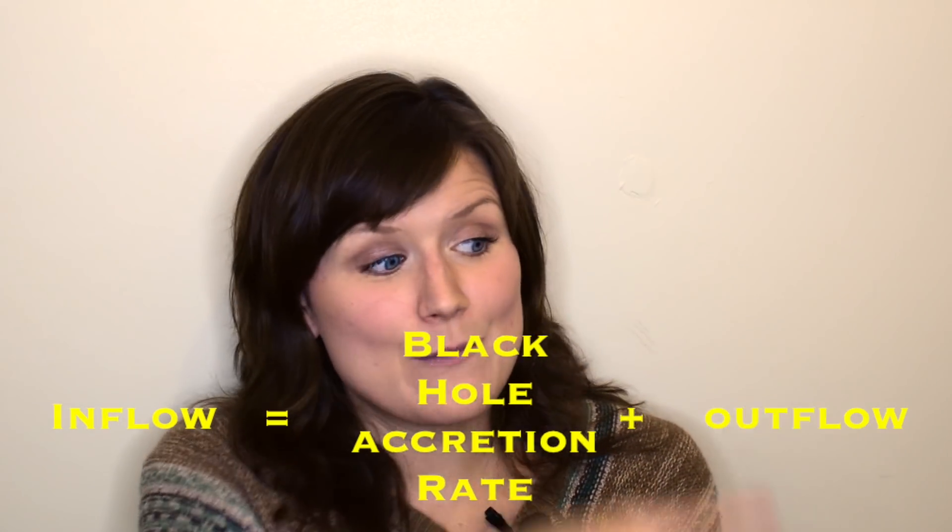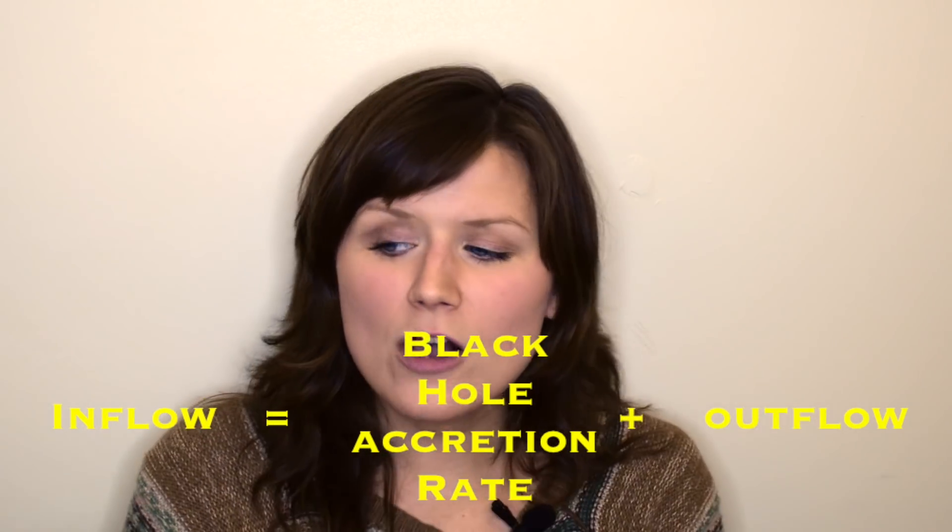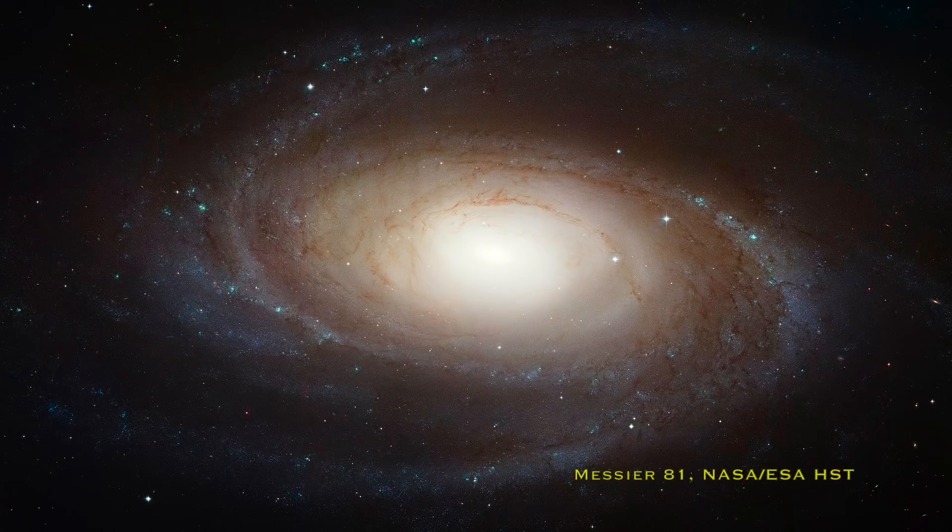That's really kind of cool because the reason we were studying them, these bulgeless galaxies, is you want to be able to constrain what process is building these black holes. You need to know how much mass is coming into the black hole, the inflow rate if you will. Now, the inflow is inflow plus black hole accretion rate plus outflow. So you can't constrain that inflow and say it might be this process because we can get this much inflow rate from this alone. If you only measure the accretion rate of the black hole, you've got that outflow component as well.